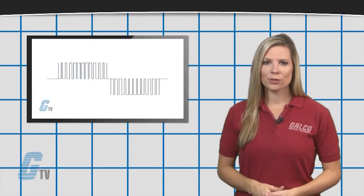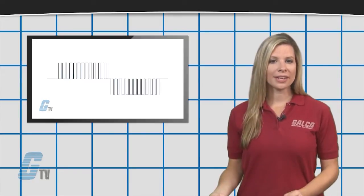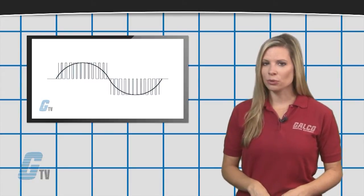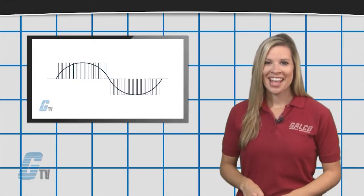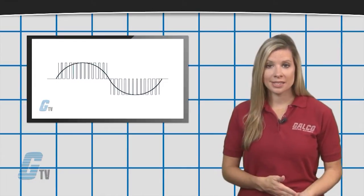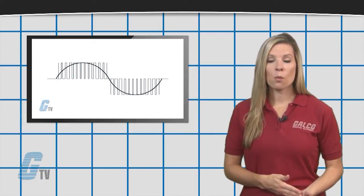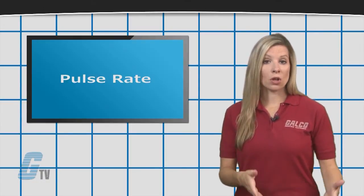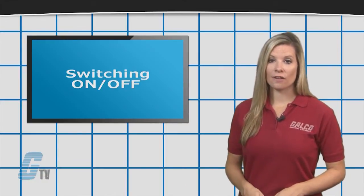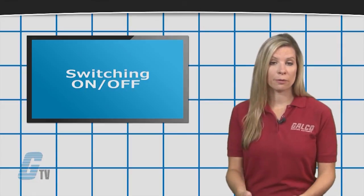In an AC motor drive, the phase to phase voltage is modulated with a series of DC pulses with varying degrees of on time. This process will happen many times over a period of milliseconds and will act as a sine-like waveform. The rate of pulses, length of on time, and the switching between on and off state changes how the sine wave would look and perform.